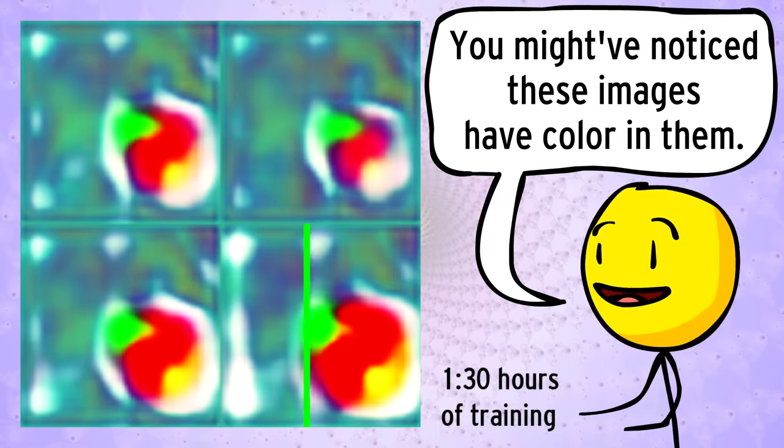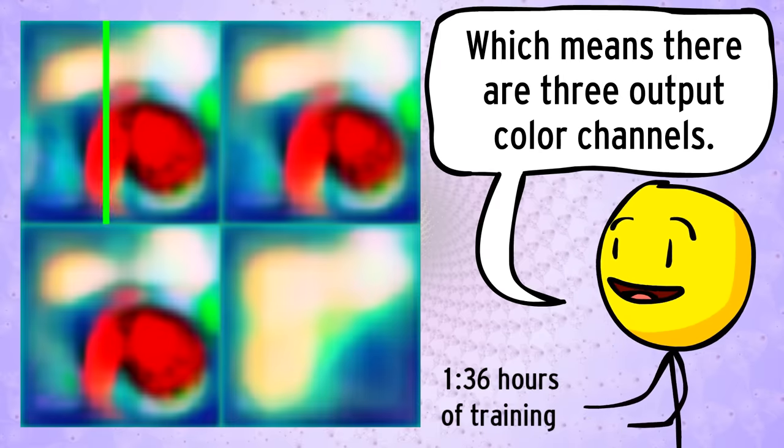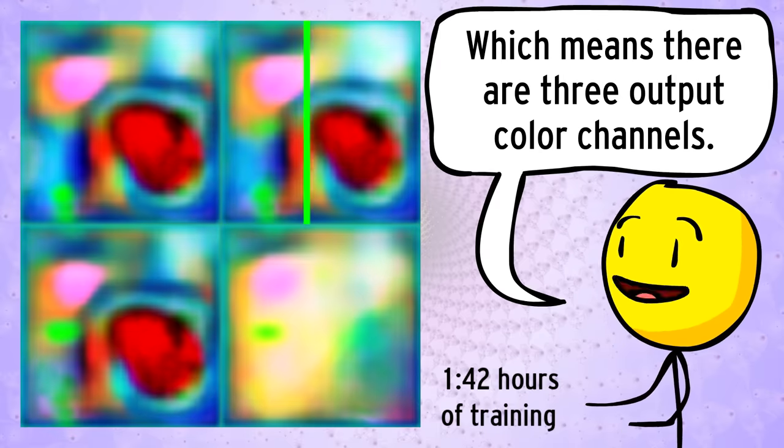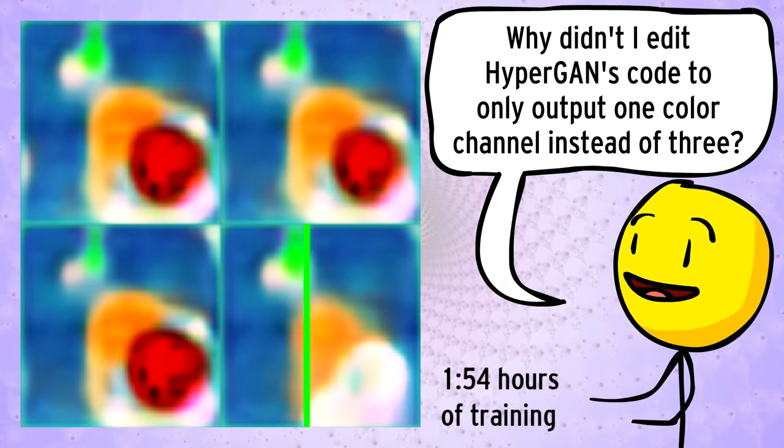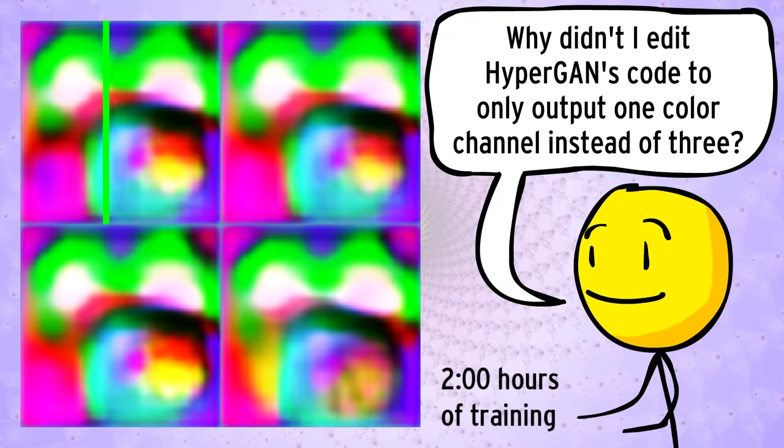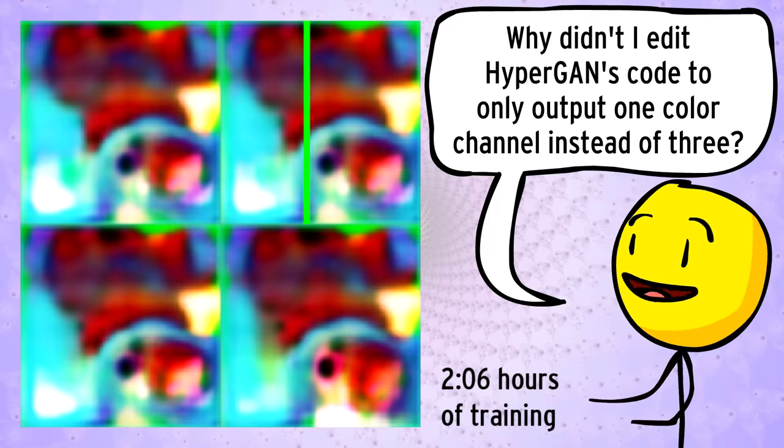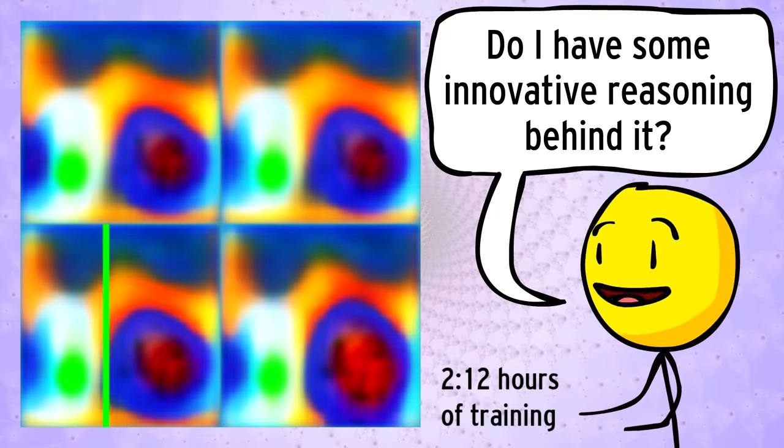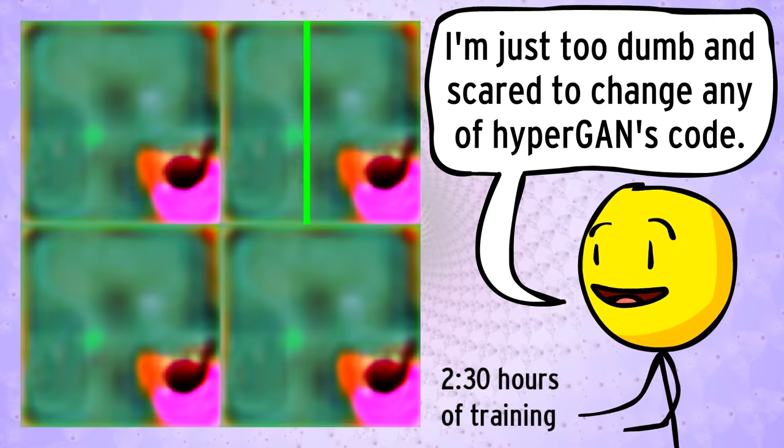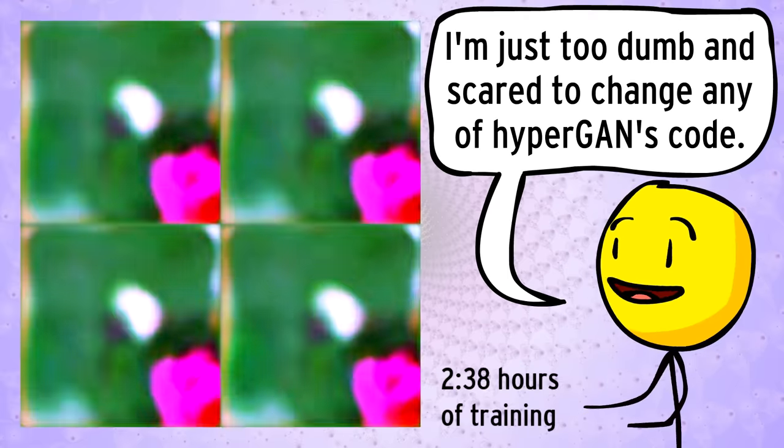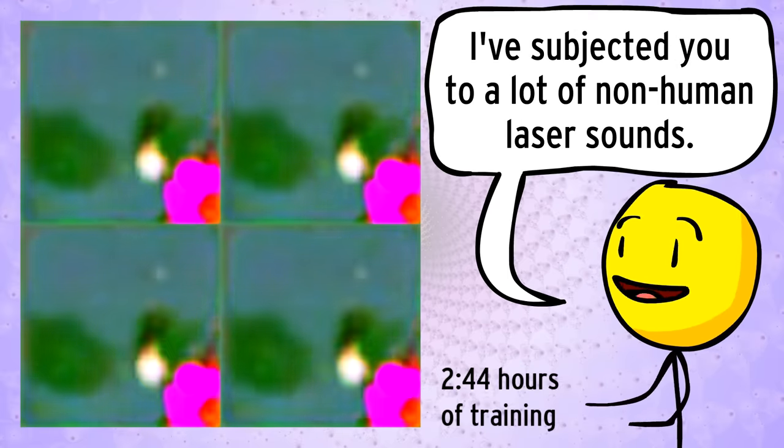You might have noticed these images have color in them, which means there's three output color channels, whereas the desired spectrogram images are only grayscale. Why didn't I edit HyperGAN's code to only output one color channel instead of three? Do I have some innovative reasoning behind it? The answer is no. I'm just too dumb and scared to change any of HyperGAN's code.